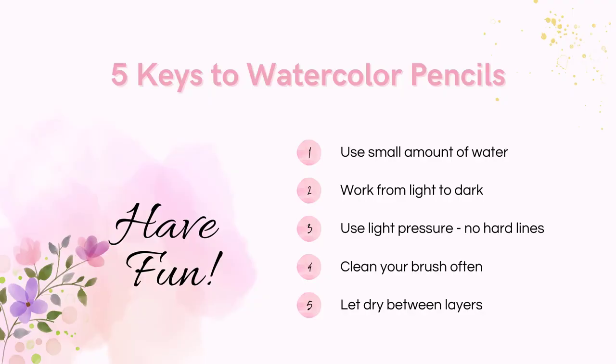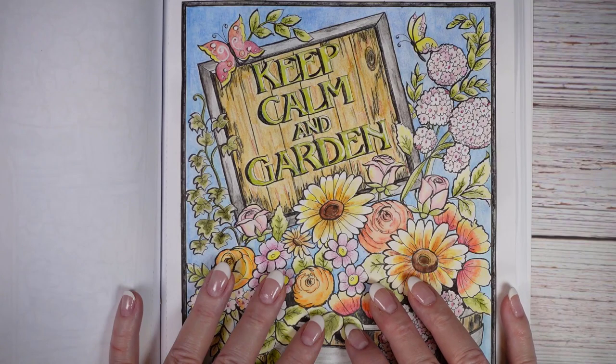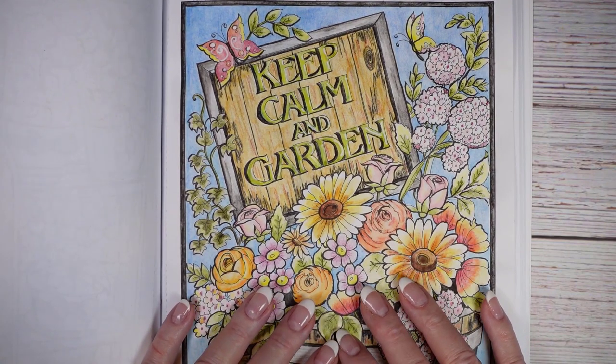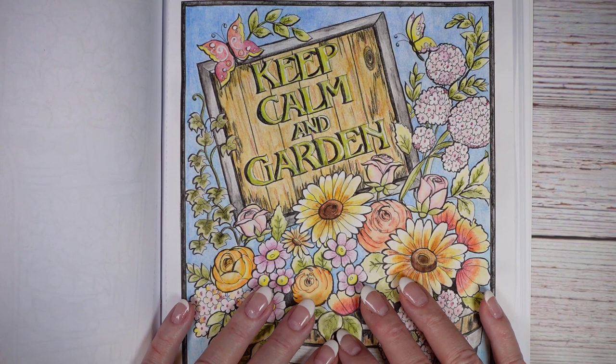Just to recap, the five keys to watercolor pencils are to use a small amount of water, work from light to dark, use light pressure and make no harsh lines, clean your brush often and always between colors, and let your layers dry before you add another layer. All right guys, that's it for this week. Thank you for joining me. I hope you enjoyed your wine, and next week we'll be talking about gel pens. I hope to see you there.